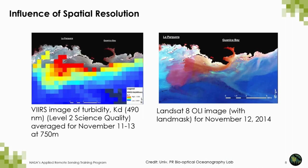Here we see how instruments with totally different spatial resolutions can be combined to study a particular event. This shows the movement of the river plume from its origin on the right-hand side in a Landsat 8 image collected on November 12th, and how far the plume extended towards the west in just one day, shown in a VIIRS image. Despite the difference in spatial resolutions, the advantage of having VIIRS imagery on a daily basis allowed researchers at the University of Puerto Rico's Bioptical Oceanography Lab to track the river plume moving over the nearby reef platform of La Parguera in southwest Puerto Rico. This could not have been achieved with two consecutive Landsat images, since the revisit time of Landsat is 16 days.